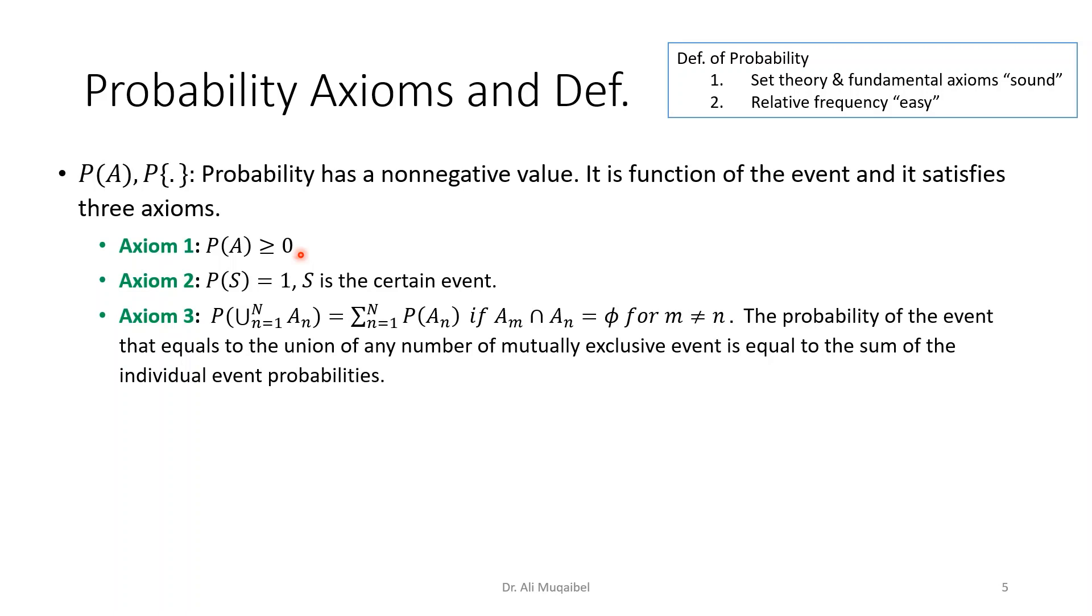Before we define, we present the basic axioms of probability. Probability has a non-negative value. It's a function of the events and it satisfies three axioms. The first one: it has to be non-negative, it should be zero or greater. So probability of an event A is always a positive value, it can be zero or above, it cannot be negative.